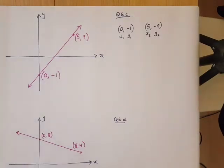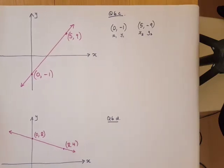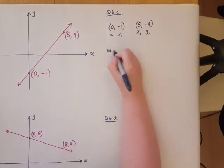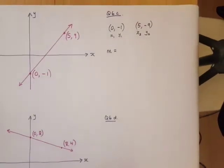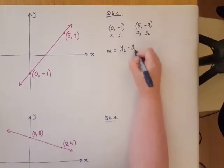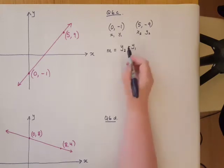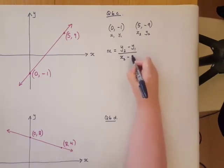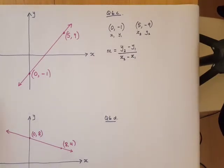Okay, now we're going to calculate the gradient using the gradient formula that we did a few lessons back, and this is it here. M for gradient equals y2 take away y1 divided all over x2 minus x1.